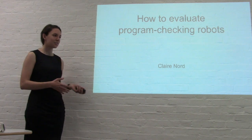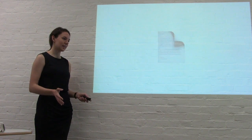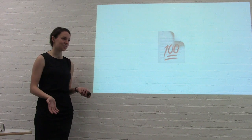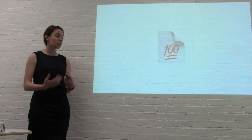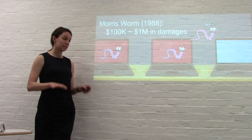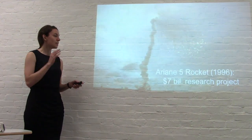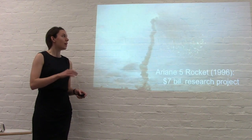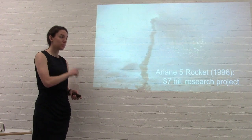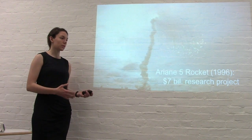Today, I'm going to talk to you about how to evaluate those program checking robots and, by extension, how to know if your teacher reads your essays. What's the worst that can happen if your teacher doesn't read your essay very thoroughly? The worst that happens is probably that you get a grade you didn't deserve. But what's the worst that happens if one of those checking robots isn't doing its job thoroughly? A small mistake in computers in the 1980s pretty much shut down the entire internet — the first computer virus — causing between $100,000 and $1 million in damages. And in 1996, a rocket launch program, because of a small mistake in expecting the size of a number, caused a $7 billion research project to blow up on launch. So it's really important that programs checking other programs are doing a good job.